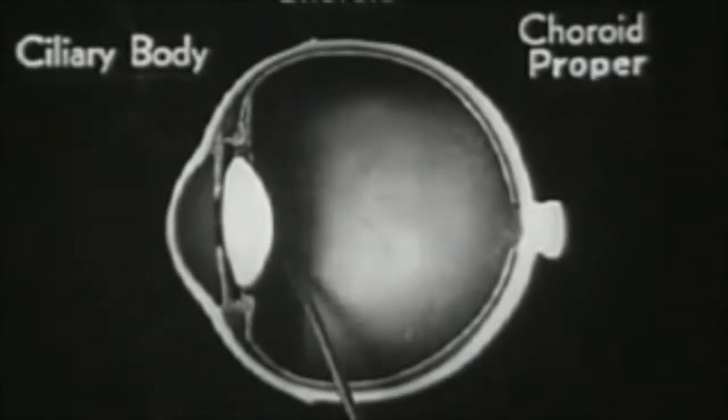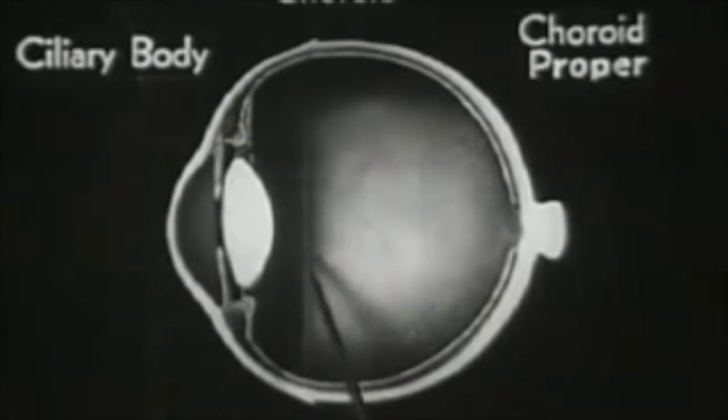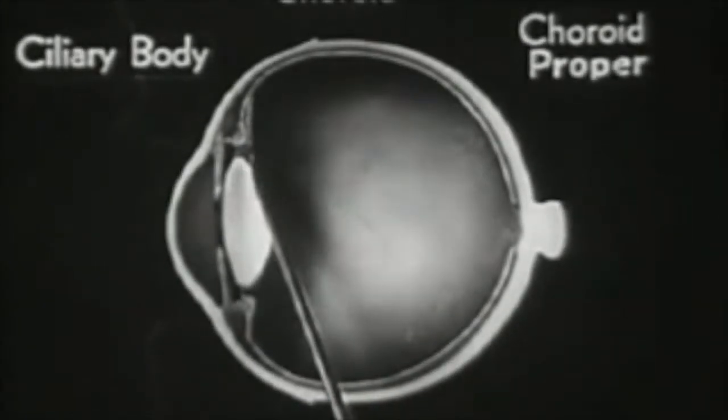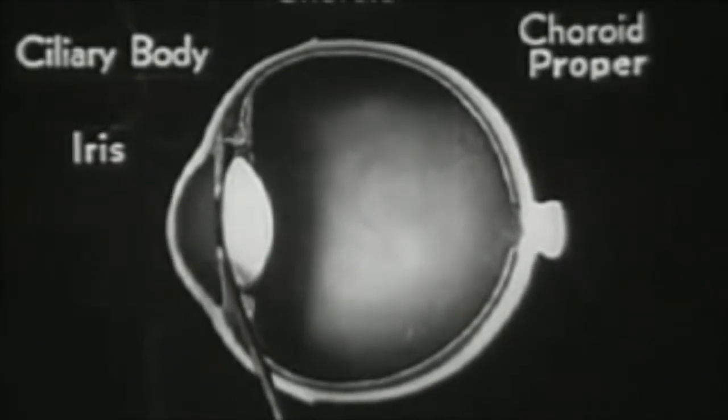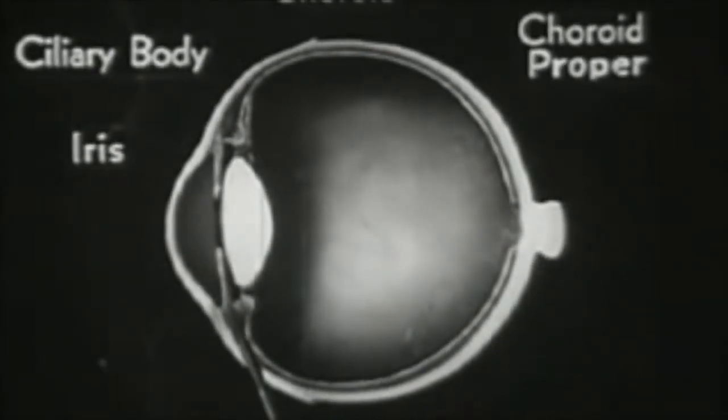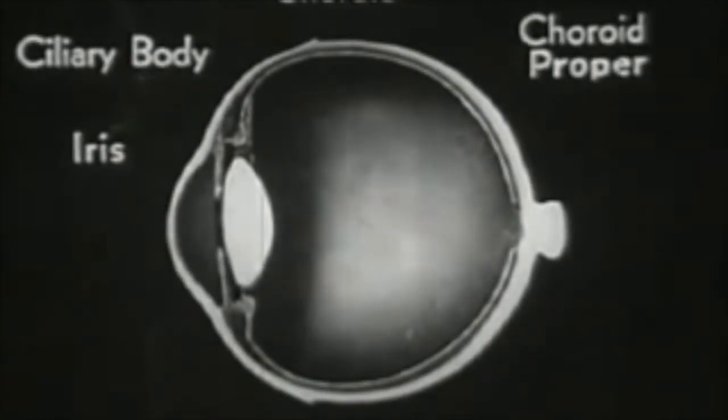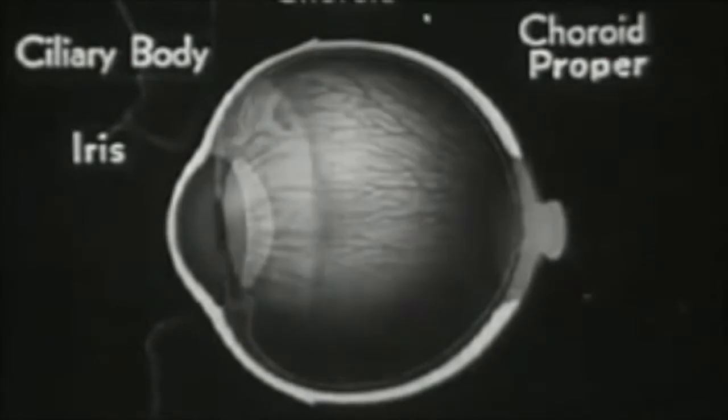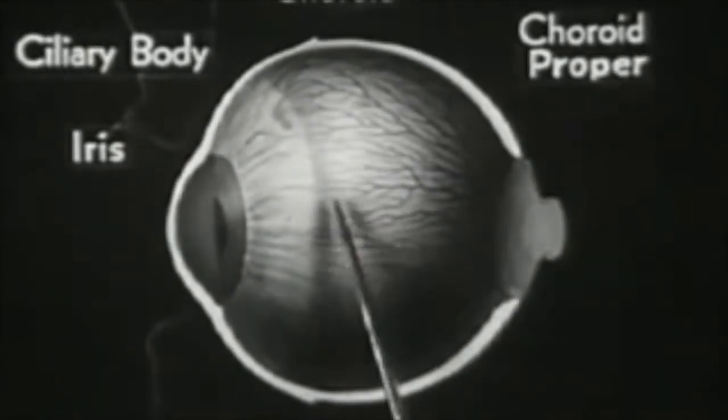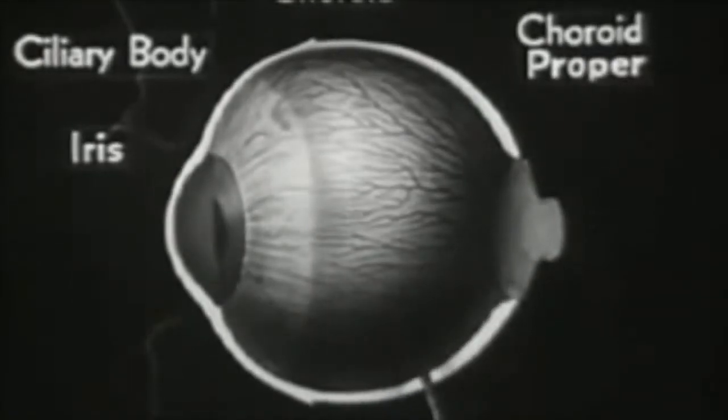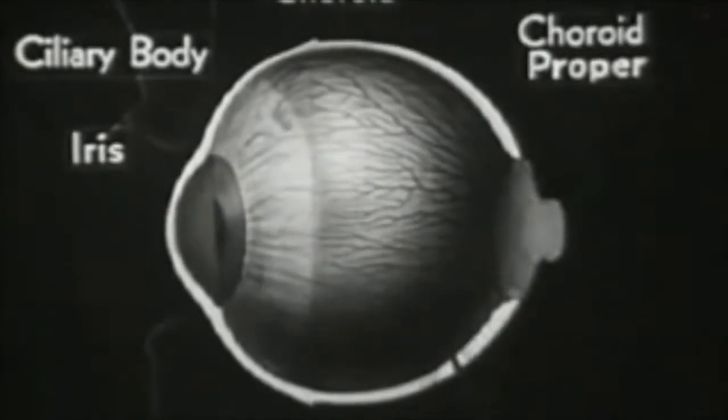The third zone is the well-known iris, which expands and contracts the pupil much like the diaphragm of a camera. The iris will soon be described in greater detail. Here is an outside view of the entire choroid which shows the dense network of arteries and veins carrying nourishment to the eyeball. You can also see the shape of the ciliary body and the iris.